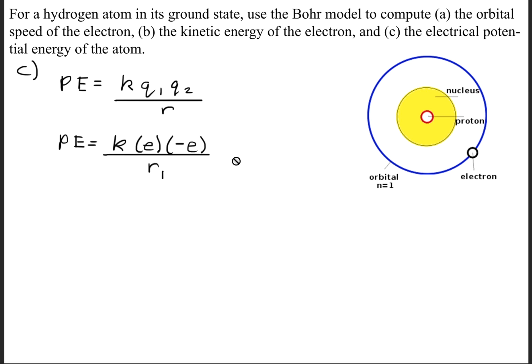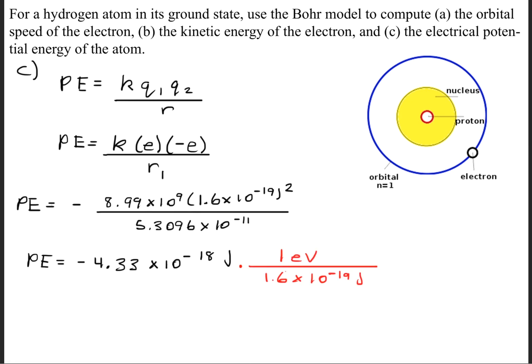When we go ahead and plug this in, we'll have an E for Q1 and a negative E for Q2. And we're going to use the radius that we found from before. We'll go ahead and plug in the values for the variables, and we'll get a potential energy of negative 4.33 times 10 to the negative 18th joules. Once again, we'll need to convert that to electron volts, and we'll get a potential energy of negative 27.1 electron volts.